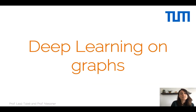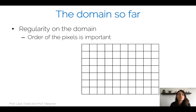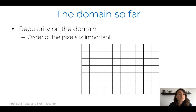Welcome to the lecture on deep learning on graphs. Today we're going to move a little bit away from the domain we have seen so far. We have worked a lot on images, which is a very regular domain. The order of the pixels is really important — whether you have the eye and the nose at a certain location matters. There is a certain regularity: neighbors are always placed on the same positions, and the order is also important.